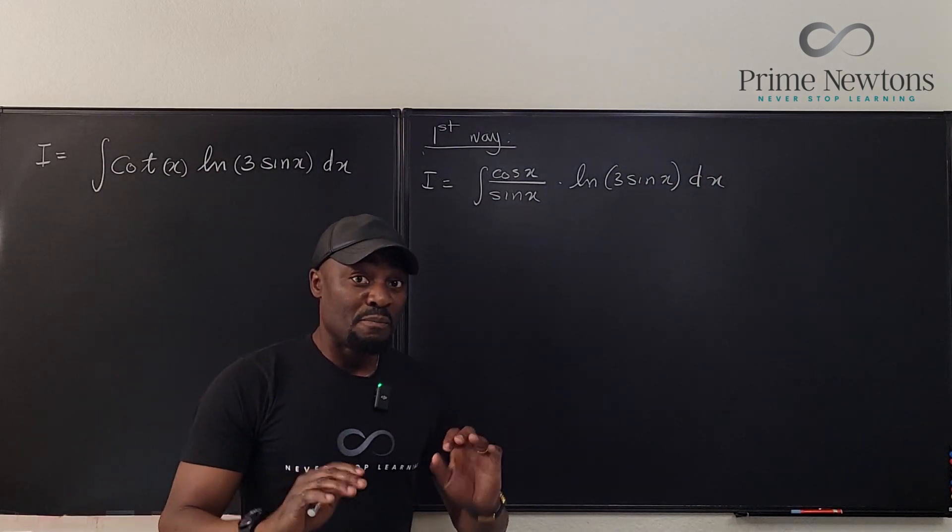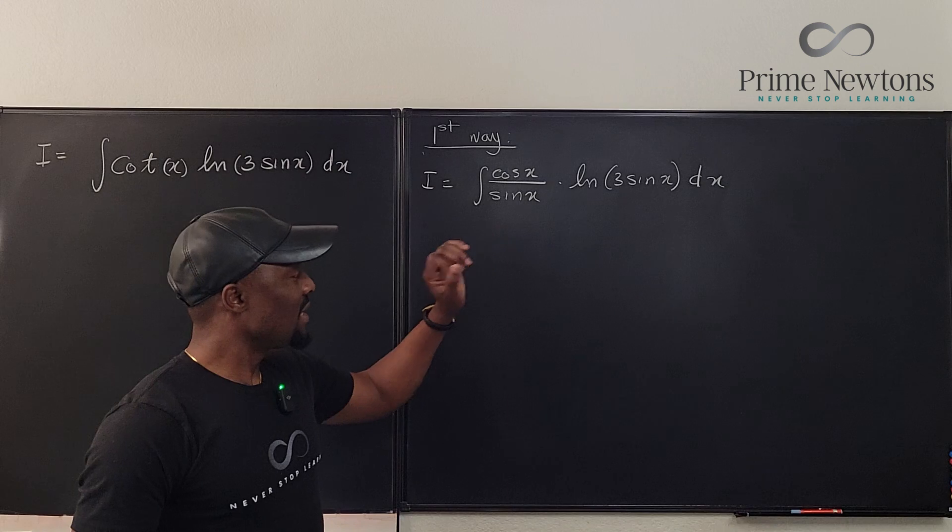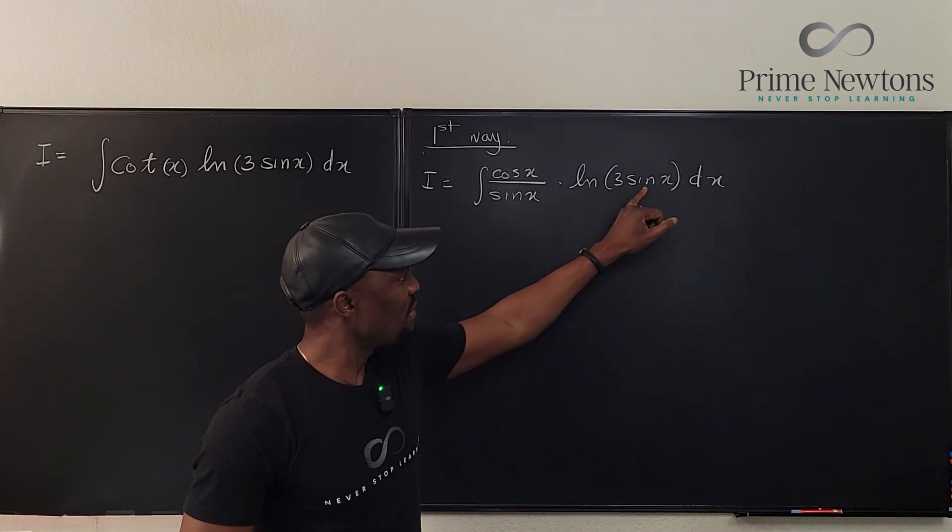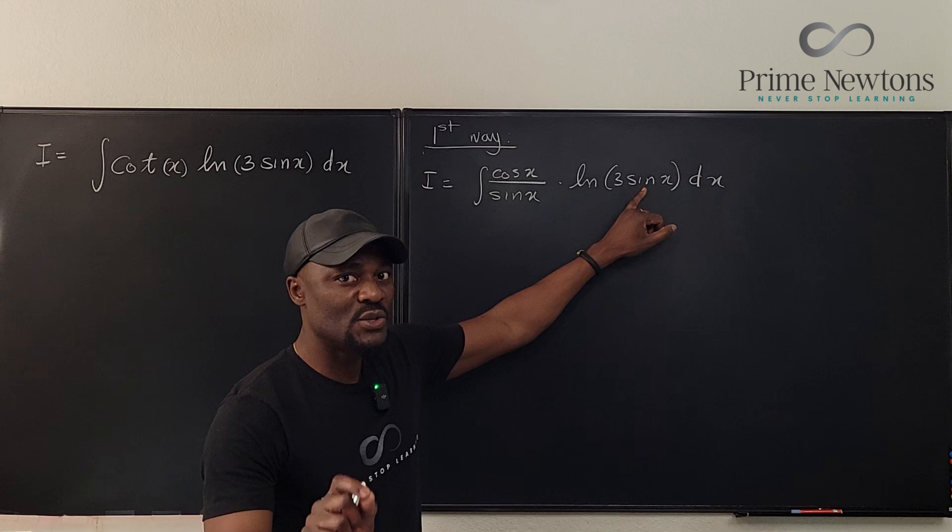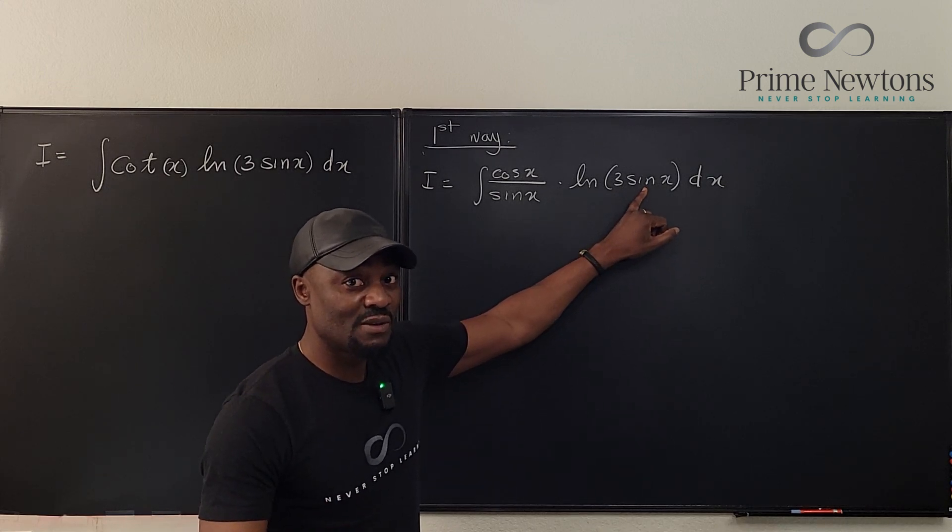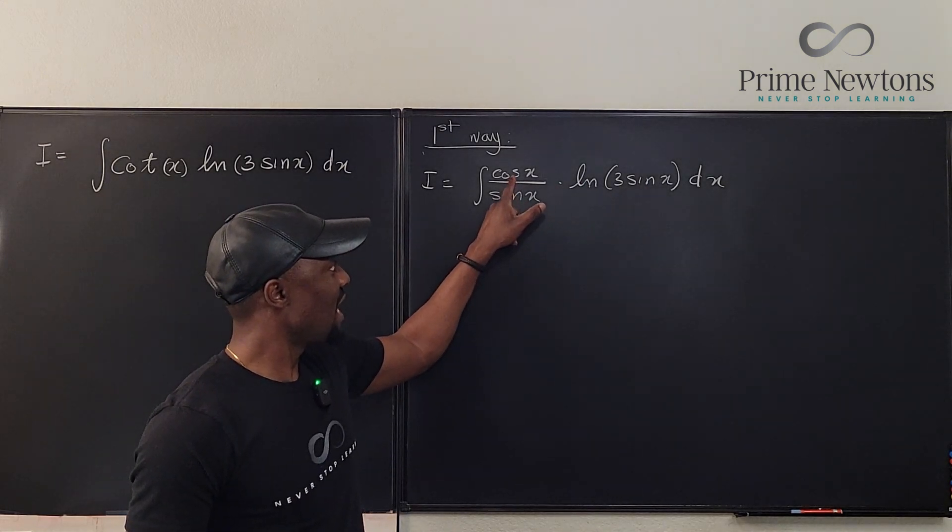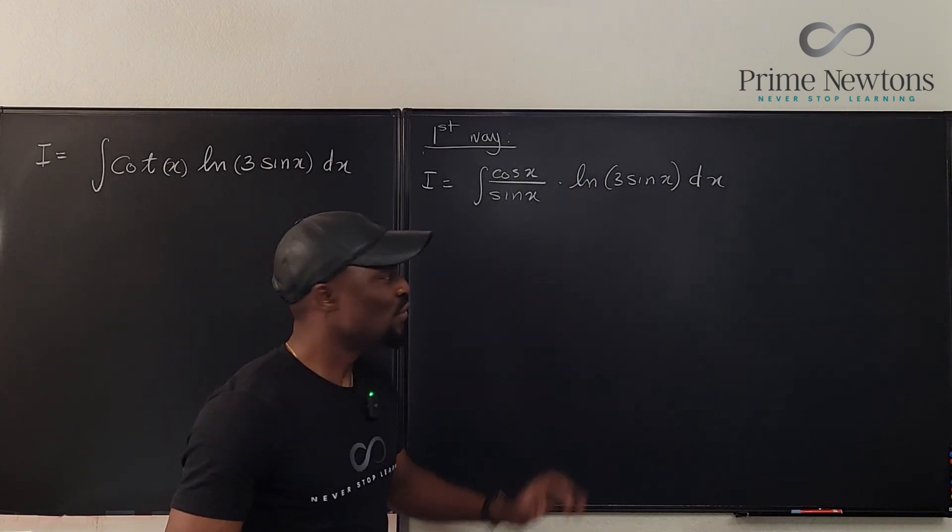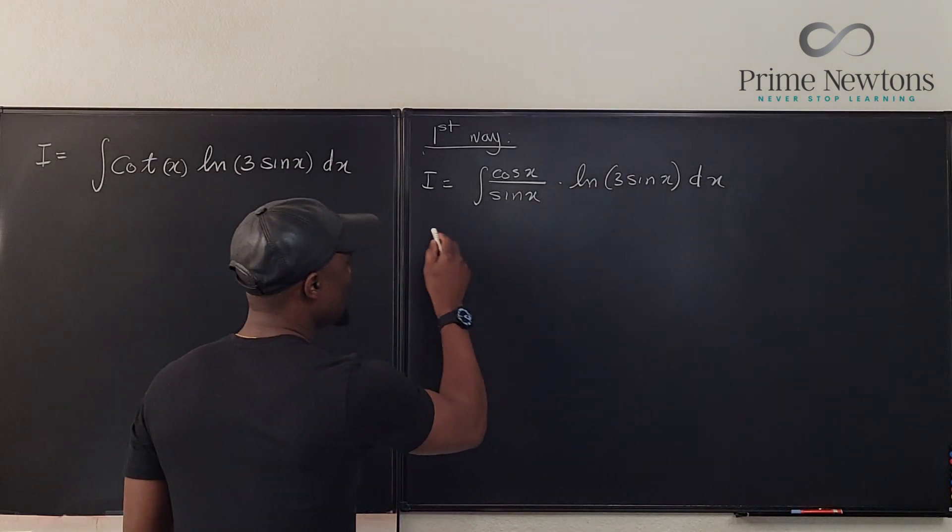Because you're just starting, you might be thinking I should take sine x because if I take sine x to be my u, then the derivative of sine x is cosine x, and I can get rid of this cosine x. So we say u-substitution: let u equal sine x.